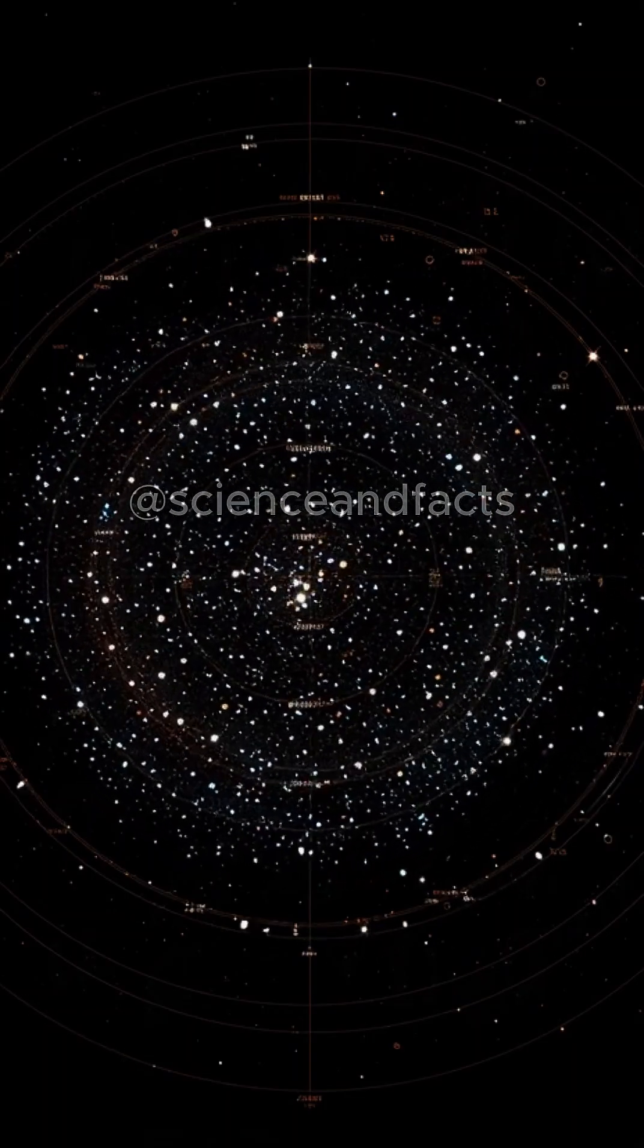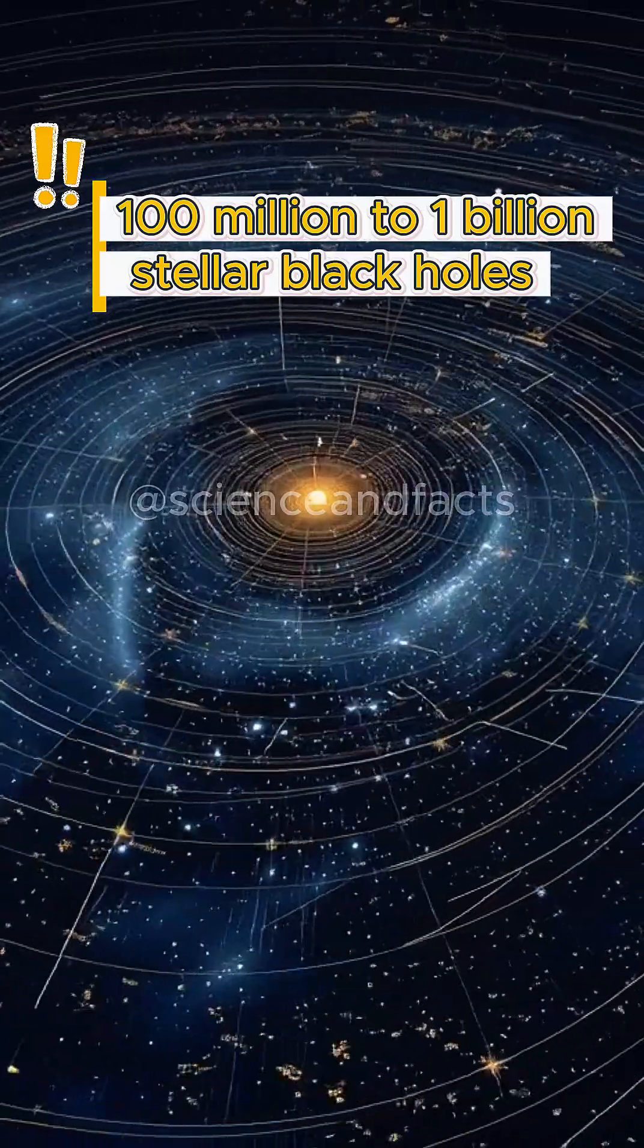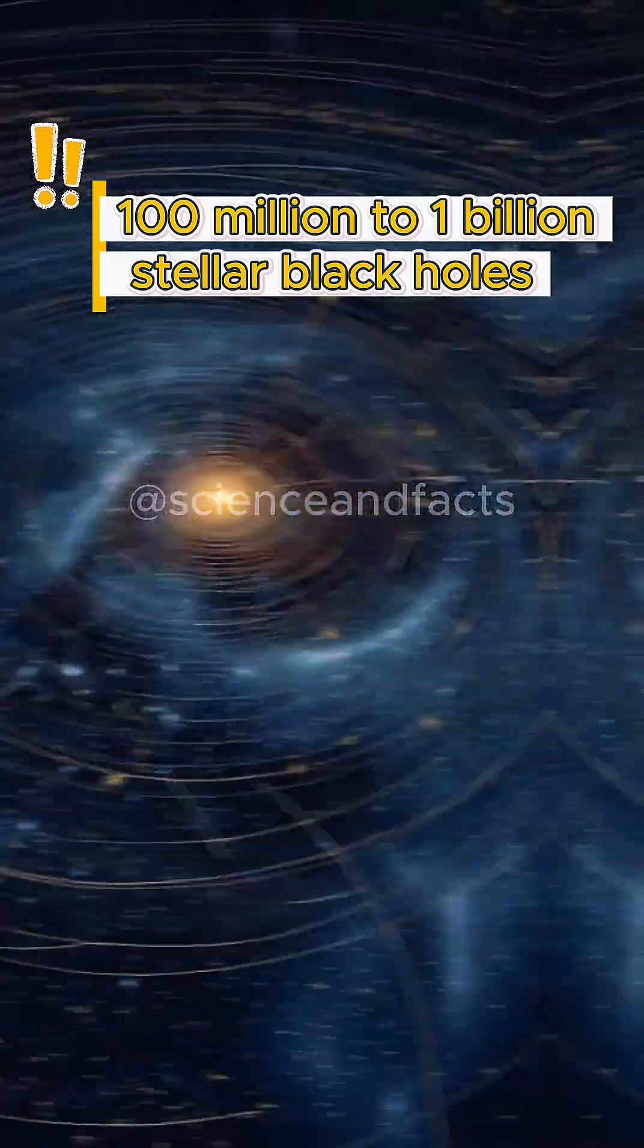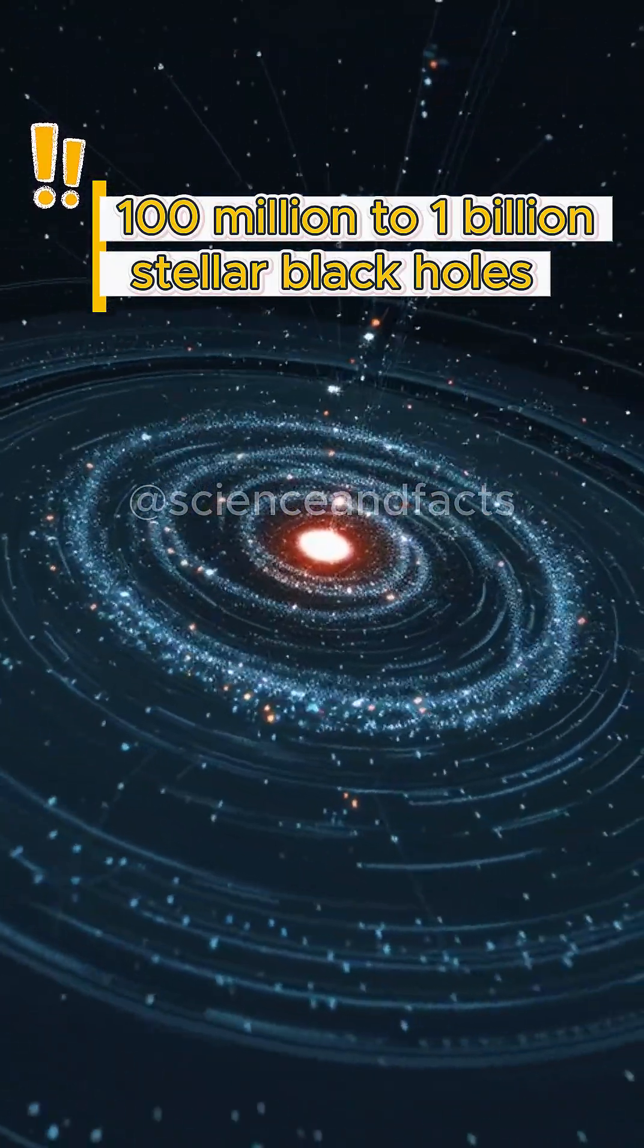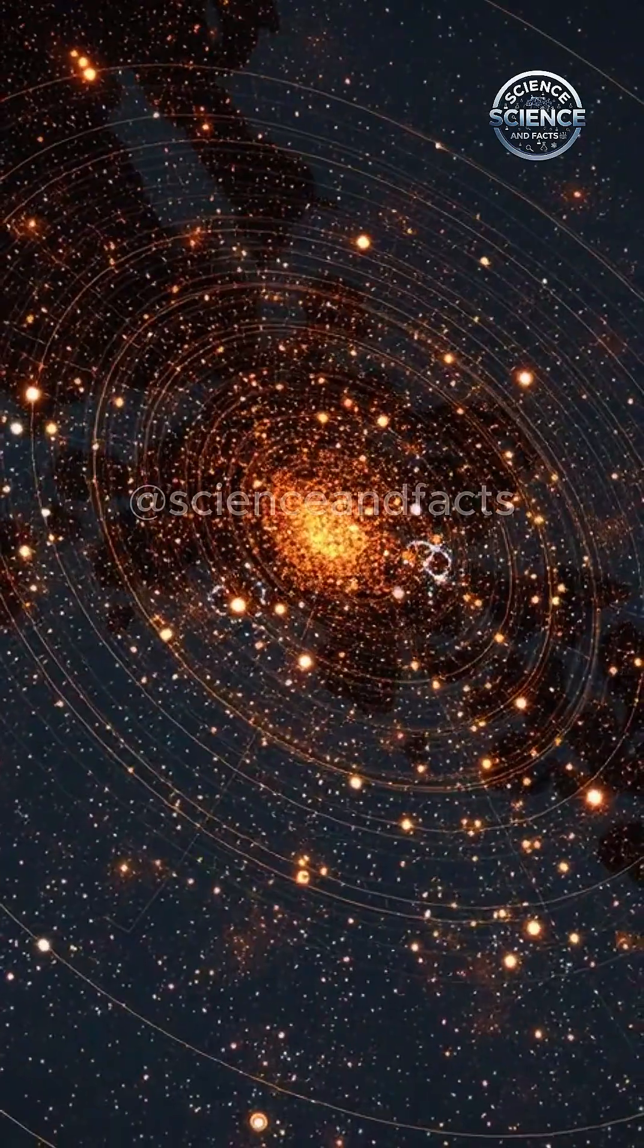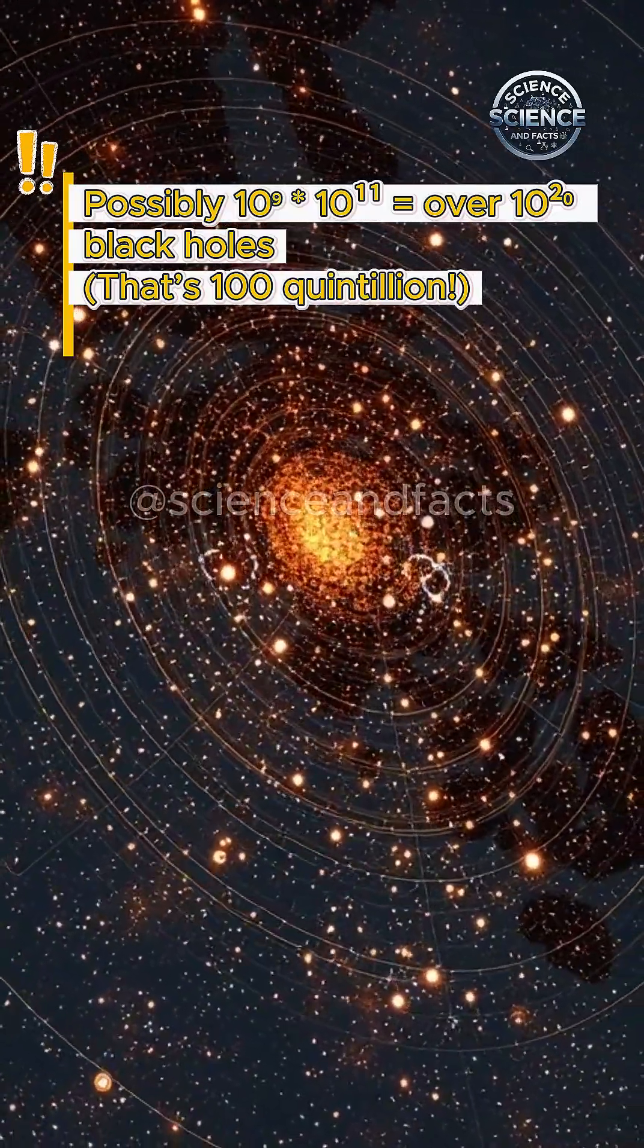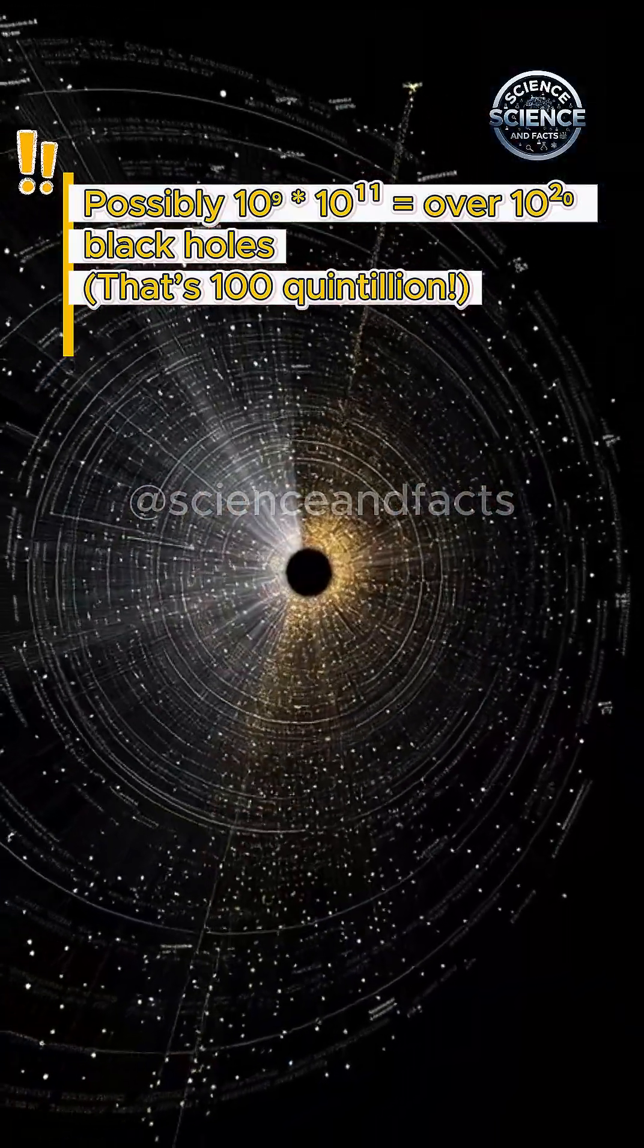Estimated black holes in our Milky Way: 100 million to 1 billion stellar black holes. Only a fraction can be detected in the observable universe. Possibly 10^18 or over 10 quintillion black holes. That's 100 quintillion.